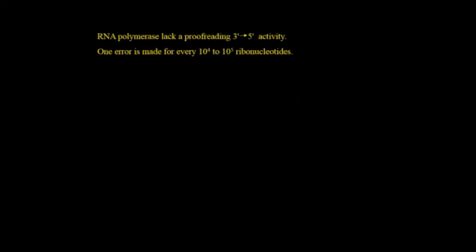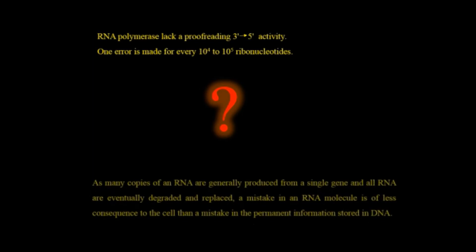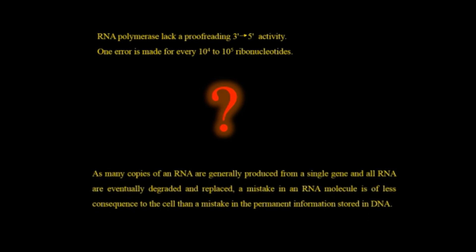RNA polymerase lacks a proofreading 3 prime to 5 prime activity. So one error is made for every 10 to the power 4 to 10 to the power 5 ribonucleotides. The question is if this much error occurs, how is it possible that genetic diseases will not occur? The answer is very simple. As many copies of RNA are generally produced from a single gene and all RNA are eventually degraded and replaced, a mistake in an RNA molecule is of less consequence to the cell than a mistake in the permanent information stored in DNA.